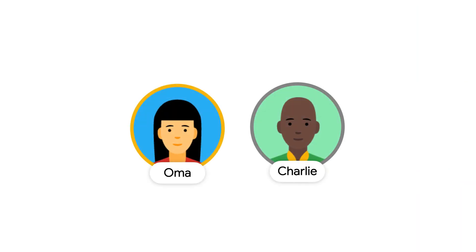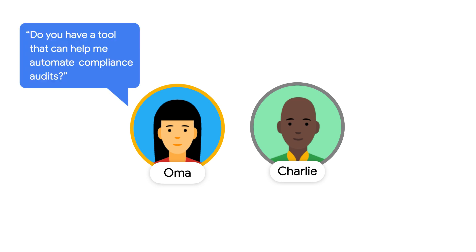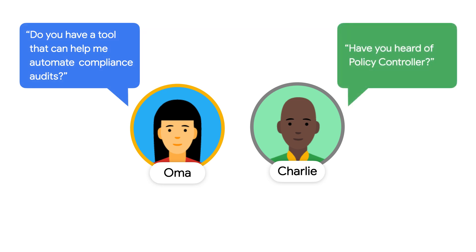Oma heard a lot about the new tools that Charlie's team introduced and is wondering if those tools can possibly help them. After hearing their issues, Charlie explains Policy Controller and how it can not only ensure compliance but also enable audit logging of violations that were uncovered when policies were introduced. Oma is intrigued to say the least.